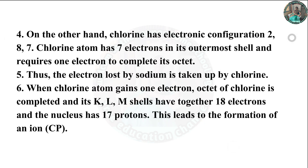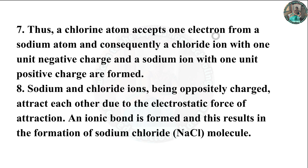Chlorine has electron configuration 2, 8, 7. The chlorine atom has seven electrons in its outermost shell and requires one electron to complete its octet. The electron lost by sodium is taken by chlorine. When the chlorine atom gains one electron, its octet is completed; its K, L, M shells have together 18 electrons and the nucleus has 17 protons. Thus, a chloride ion with one unit negative charge and a sodium ion with one unit positive charge are formed. They attract each other due to electrostatic force of attraction, an ionic bond is formed, resulting in formation of the NaCl molecule.